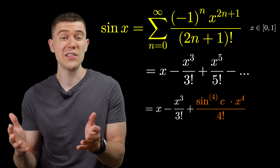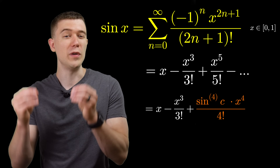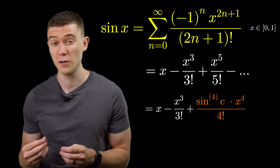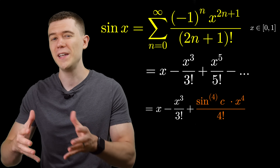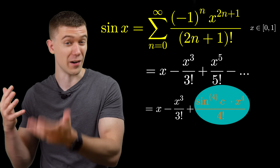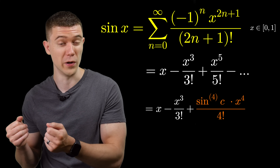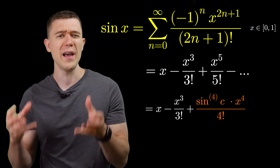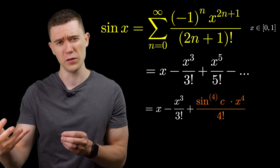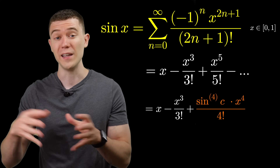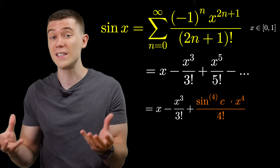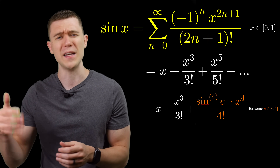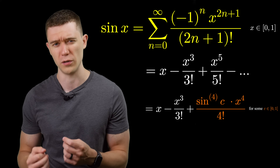The remainder theorem says that if we cut off our sum at the third-degree term, we need to add a remainder — an error term — that is a fourth-degree term. That term would be the fourth derivative of sine evaluated somewhere in our interval 0 to 1, times x to the fourth over 4 factorial.